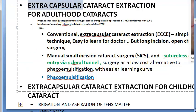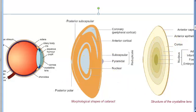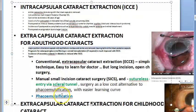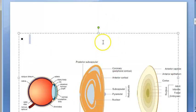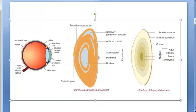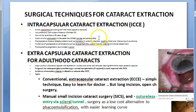The crystalline lens has an anterior part and a posterior part — correspondingly an anterior capsule and a posterior capsule. In intracapsular cataract extraction, the entire capsule — anterior capsule, posterior capsule, nucleus, and cortex — is removed together. So the entire cataractous lens along with the intact capsule is removed.